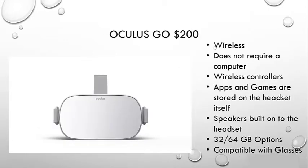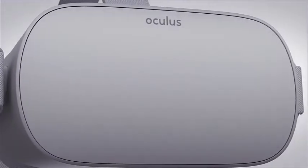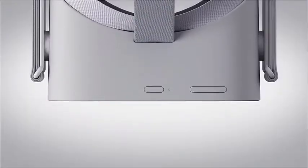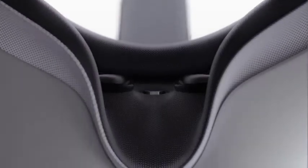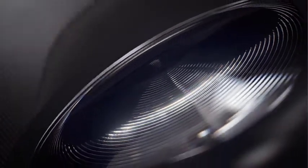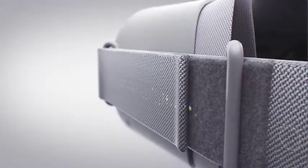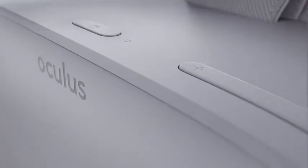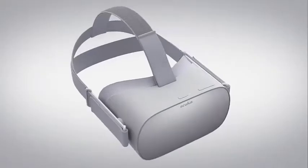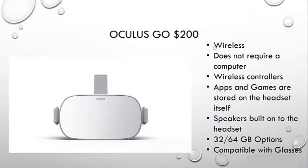Then we have the next Oculus model, which is the Go. This is the mobile one — it is a little cheaper and completely wireless, and it doesn't require a computer. All of the apps and games are stored within the headset. You get a 32 gigabyte option and a 64 gigabyte option, so you can only have at max 64 gigabytes worth of experiences at a time. With this headset you can actually use your glasses, which was an upgrade from the previous model.